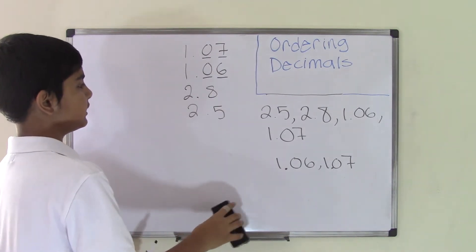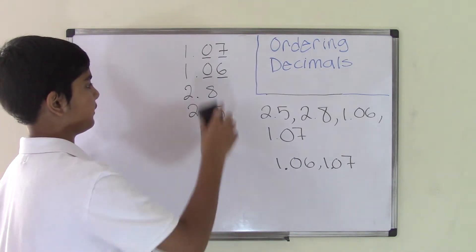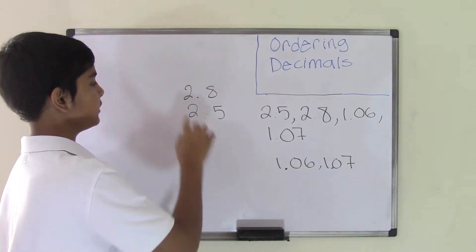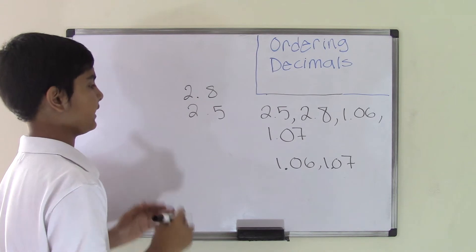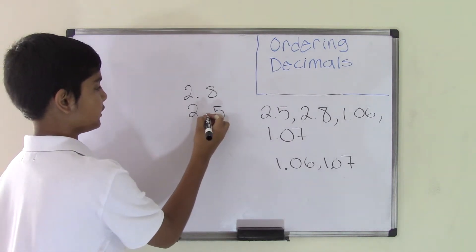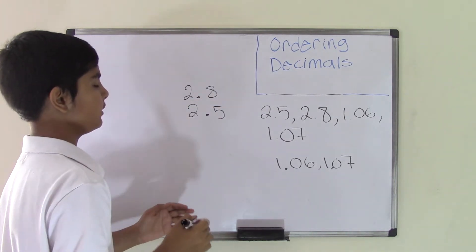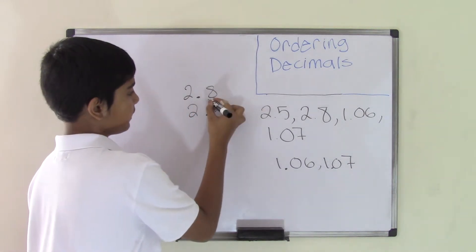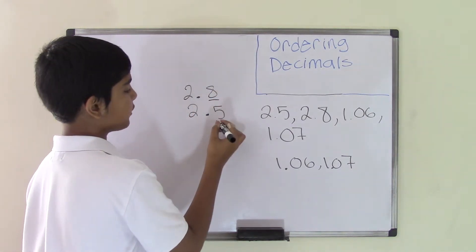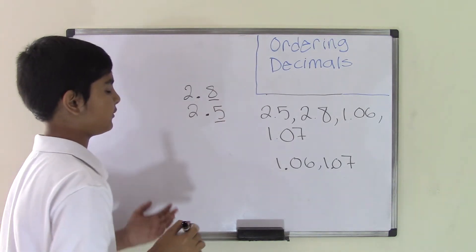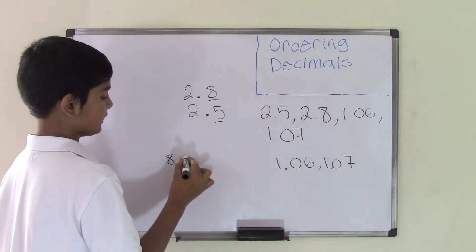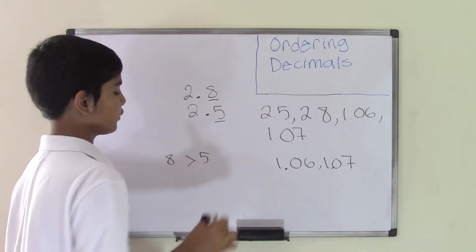Now we're going to move on to the next numbers, 2.8 and 2.5. We need to look at the decimal parts of these two numbers, which are 8 in the tenths place value and 5 in the tenths place value. These are the only numbers in the decimal parts.